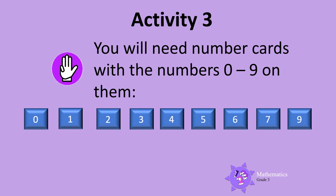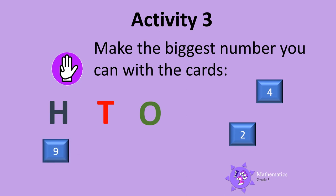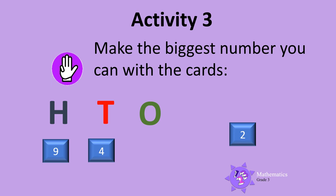Activity 3. You will need number cards with the numbers 0 to 9 on them, like this. Make the biggest number that you can with these cards: 2, 4 and 9. Which number card has the biggest digit? Can you see that 9 is the biggest digit? So 9 must be in the hundreds column. Which number card has the next biggest digit? Can you see that 4 is the next biggest digit? So 4 must be in the tens column, and 2 must be in the ones column. So the biggest number that you can make with these is 942.